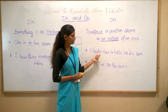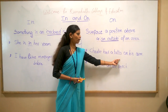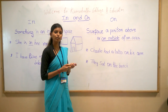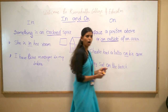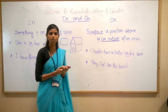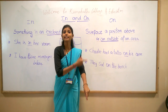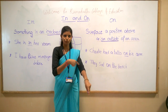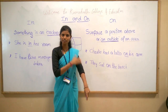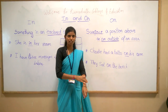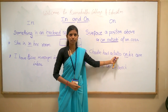Let's take an example: 'Charlie had a tattoo on his arm.' Why do we say 'on his arm' and not 'in his arm'? Because whatever you do on your arm, any kind of marking on your arm, is going to be done on a surface. So I use the preposition 'on'.